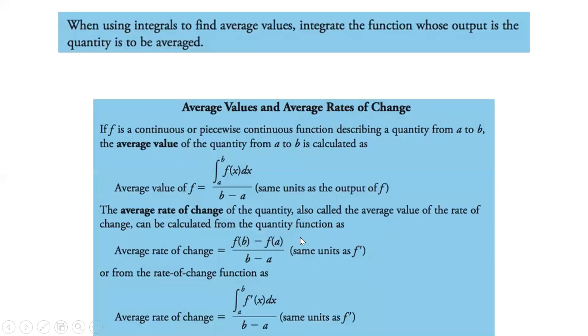So when using integrals to find average values, we integrate the function whose output is the quantity to be averaged. Our average value is our integral from a to b of f of x dx divided by b minus a, or f of b minus f of a divided by b minus a. Both of those work. Notice that's our rate of change here, and that's going to give us a value. That's just f - when we take that, that's the average value. The rate of change is the one with f prime - f prime is our average rate of change. Once we take that integral, we get to f, and we plug it in, and then we can get our f of b minus f of a divided by b minus a.